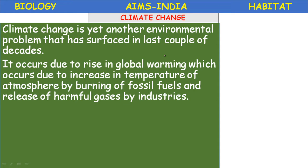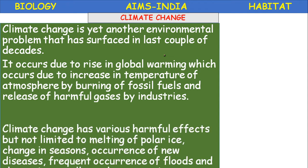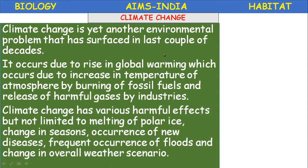This climate change occurs due to rise in global warming, which occurs due to increase in temperature of the atmosphere by burning of fossil fuels and release of harmful gases by industries. Climate change has various harmful effects including melting of polar ice caps, change in the seasons, occurrence of new diseases, frequent floods, and change in overall weather scenario. If you compare the climate at present and 20 years back, there is a lot of variation.